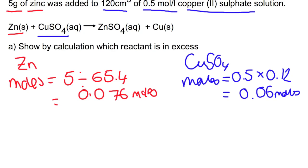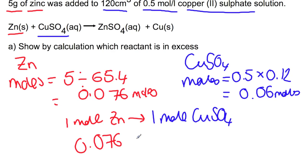Now we're going to use the mole ratio. So 1 mole of zinc requires 1 mole of copper sulfate. In our reaction, we have 0.076 moles of zinc, which means we would need 0.076 moles of copper sulfate. We don't have that many moles of copper sulfate. So copper sulfate is our limiting reagent and our zinc must be the one which is in excess.